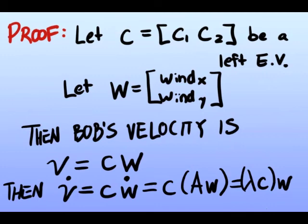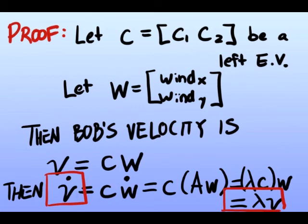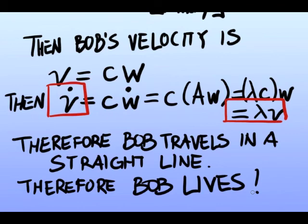Lastly, we replace CW with the definition V. So once again, we have shown that Bob's velocity, V dot, is going to be a scalar multiple of V. Therefore, we have shown that Bob will travel in a straight line. Therefore Bob lives once again.